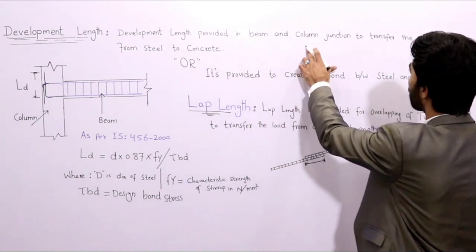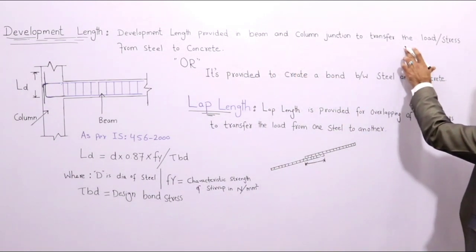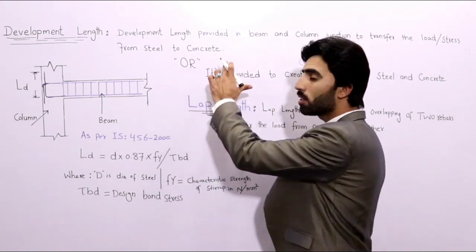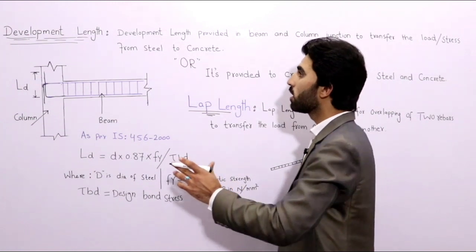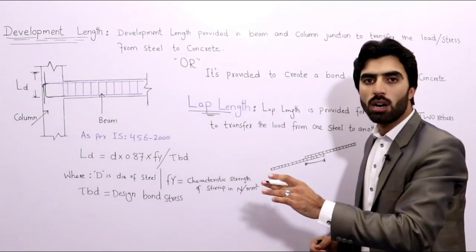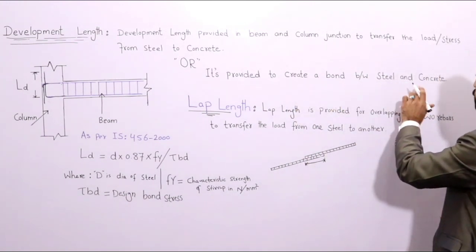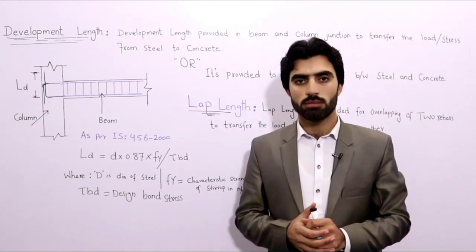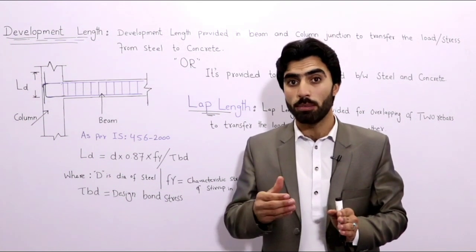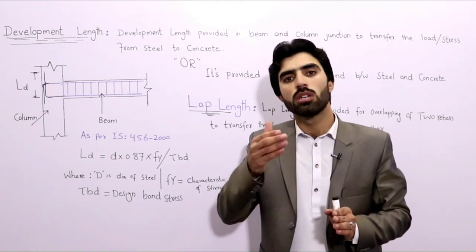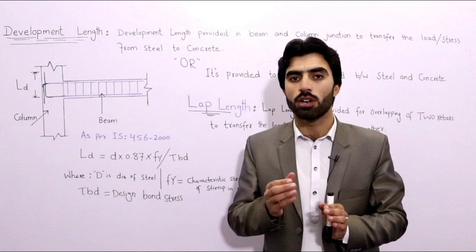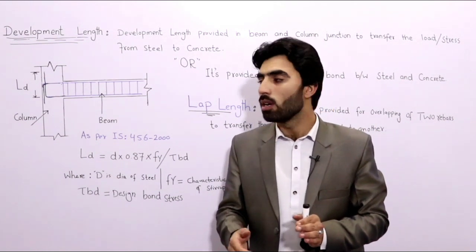Development length is provided in a beam and column junction to transfer the load or stress from steel to concrete. Or, more simply, development length is provided in a column or in a beam to create a bond between steel and concrete. Remember, if you don't provide development length in a beam, the beam will not be able to transfer the load to the column. Therefore, we must provide development length for both beam and column.